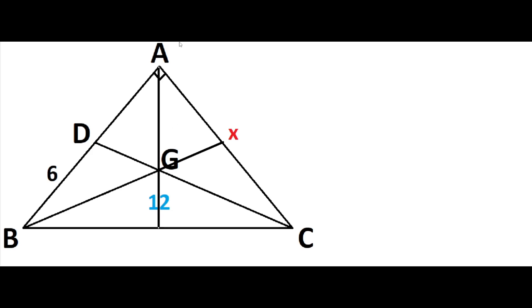We know that G is the center of mass. And we also know that here in triangle BGC we can see the median — BF here, we can see F.